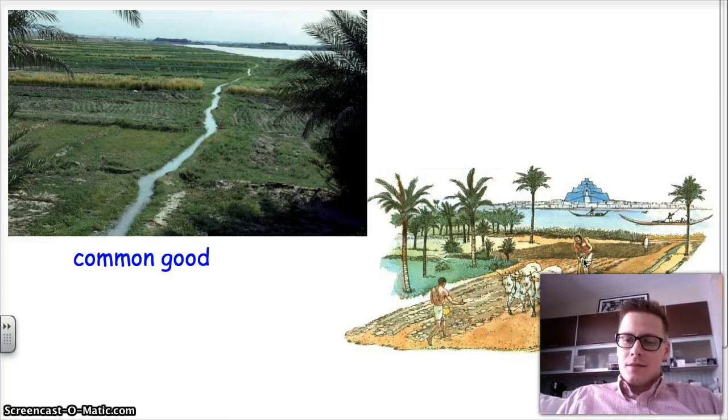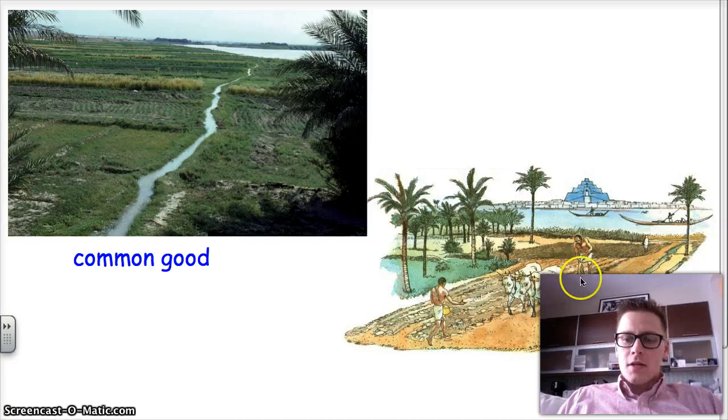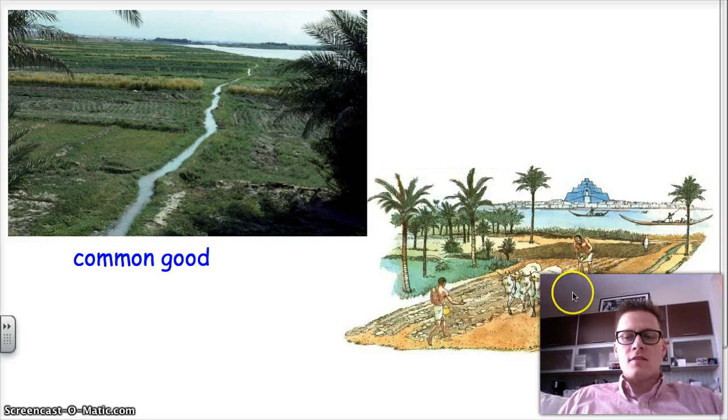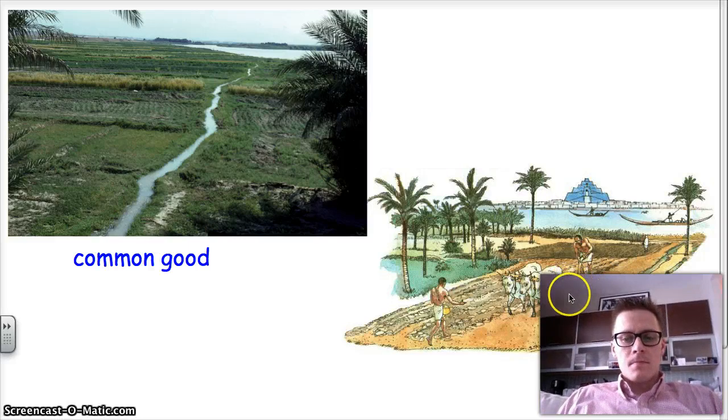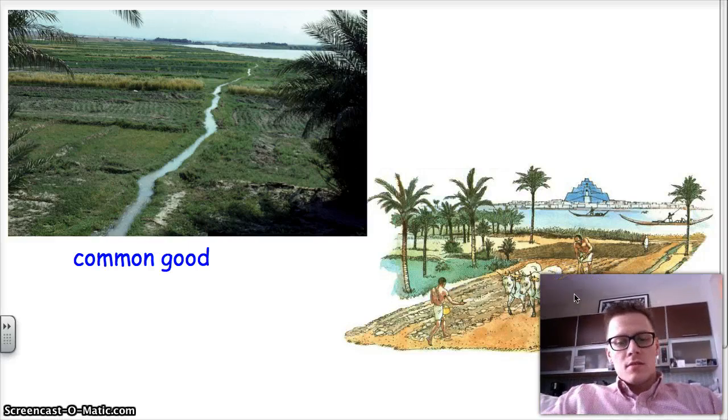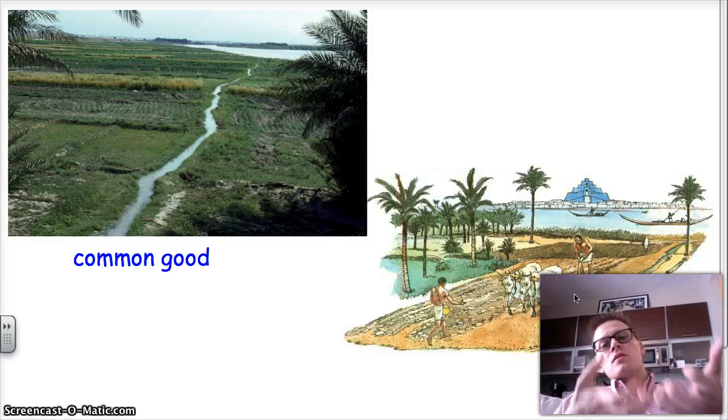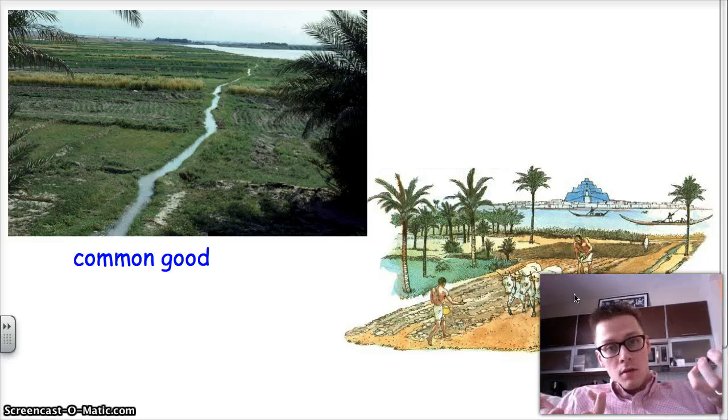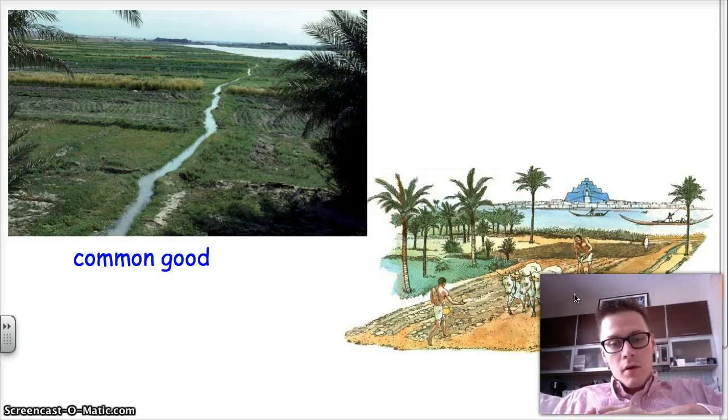Basically it's a wooden contraption with a blade on the end. Initially would have had a stone blade at the end. And they drag it across the dirt so that it pulls up the nutrients from the bottom, Kool-Aid, and turns it over.